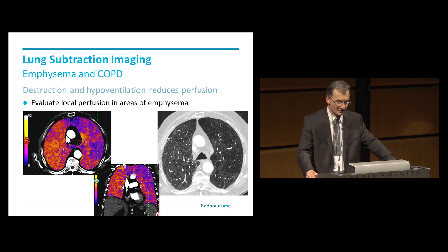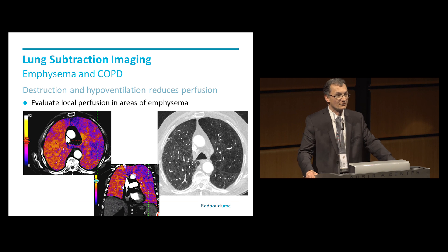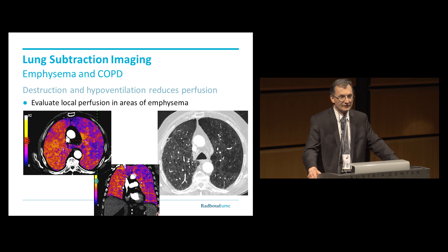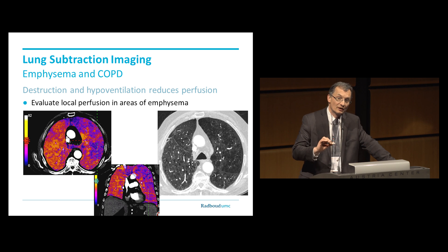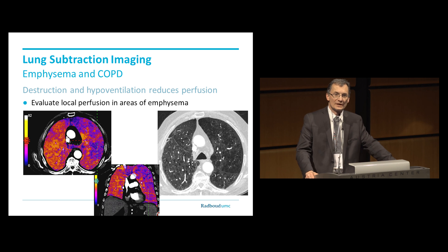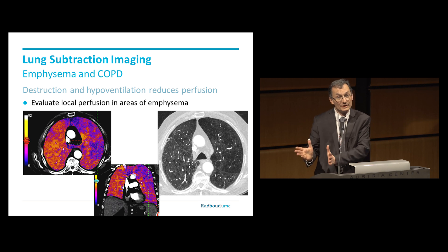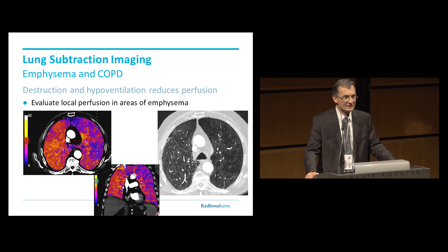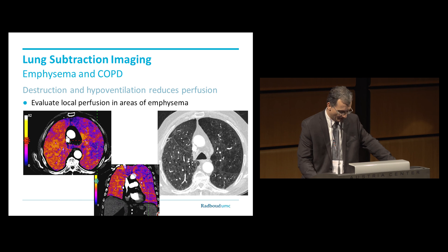There are of course a couple of pitfalls. One classic one is emphysema, which will also cause areas of reduced perfusion. Another one is the hypoxic vasoconstriction reflex, which basically means that if you have reduced ventilation in the lung, you also get reduced perfusion — which means that if we see a perfusion defect, that does not necessarily mean there is an embolus. We basically have to go back to our old knowledge about lung scintigraphy to interpret these images correctly.